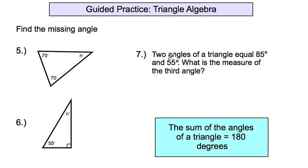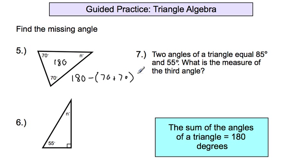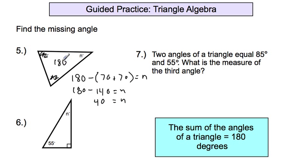Sometimes you're going to have triangle algebra and need to find a missing angle. In number 5, you have two known angles — 70 and 70 — and an unknown third angle, N. All triangles have 180 degrees on the inside. So we take 180 and subtract all of the angles we do know: 70 plus 70 equals 140. So 180 minus 140 equals N, and N equals 40 degrees.